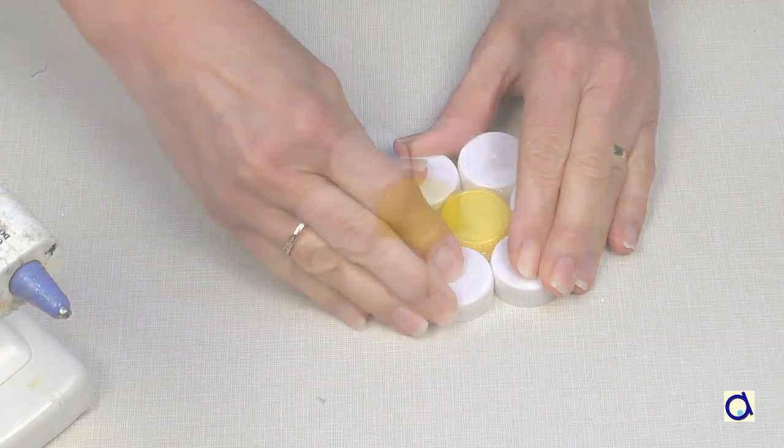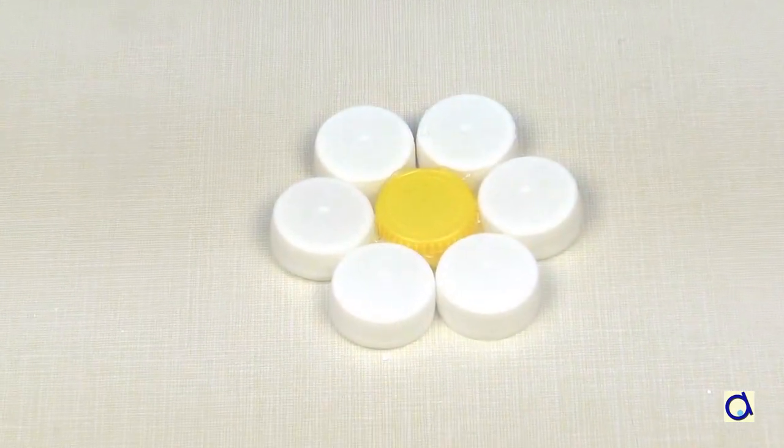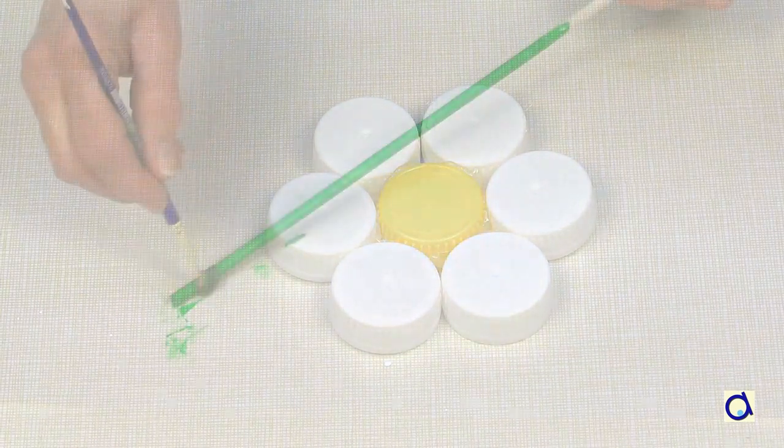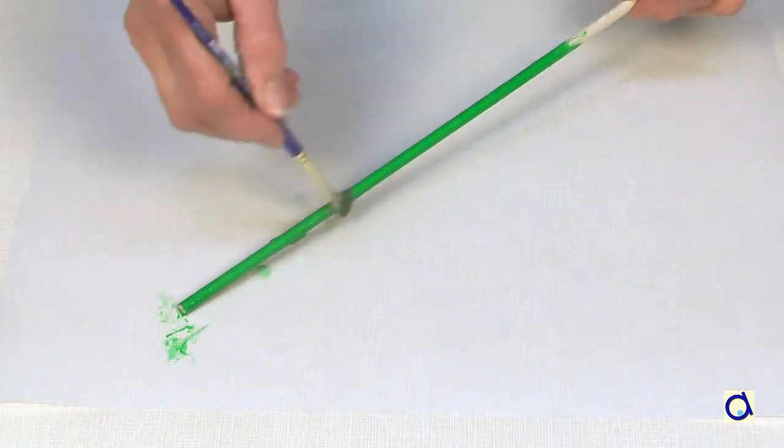And there, your daisy flower is ready! For the stem, you can take a thin wooden dowel that you paint in green.